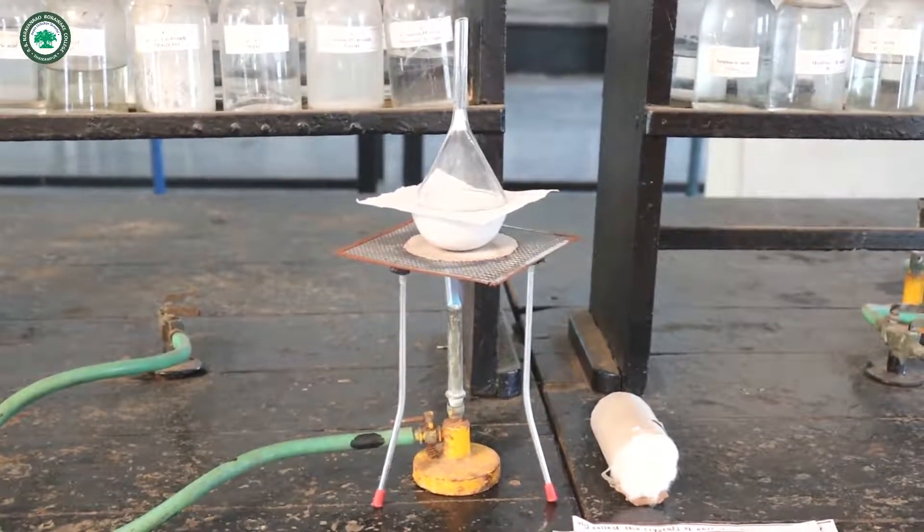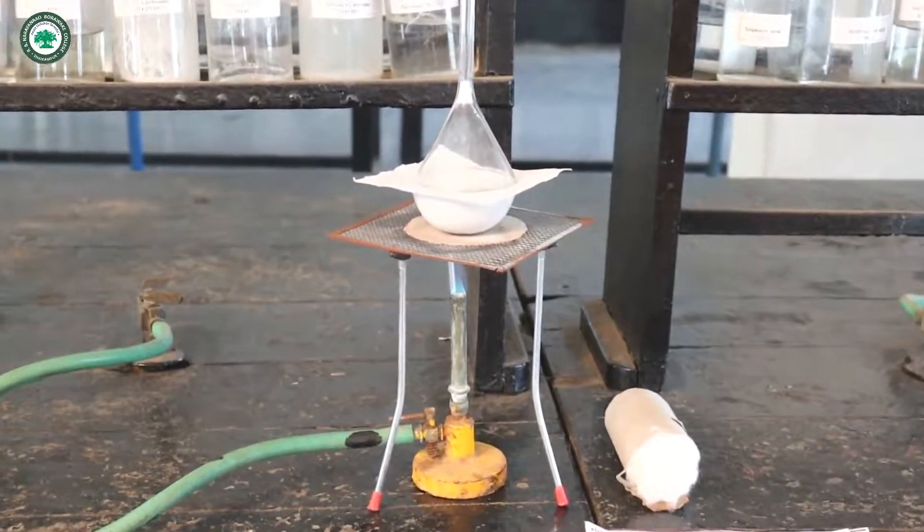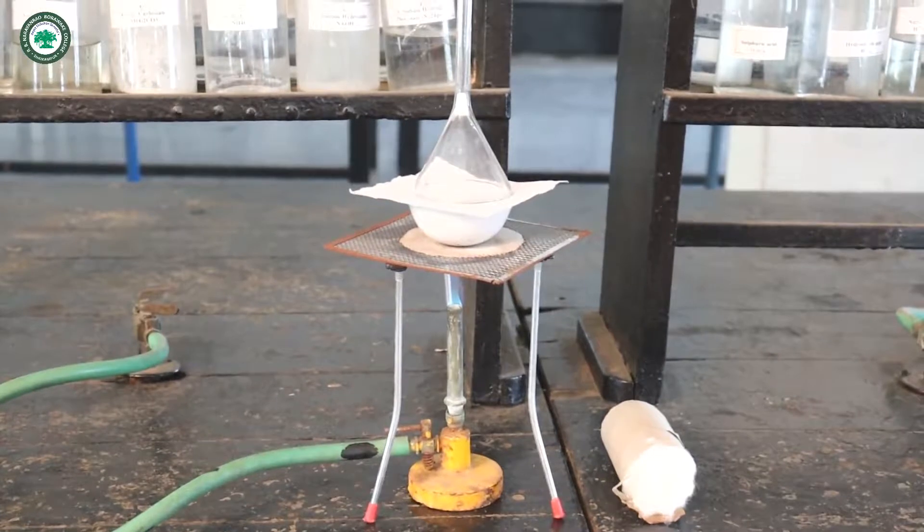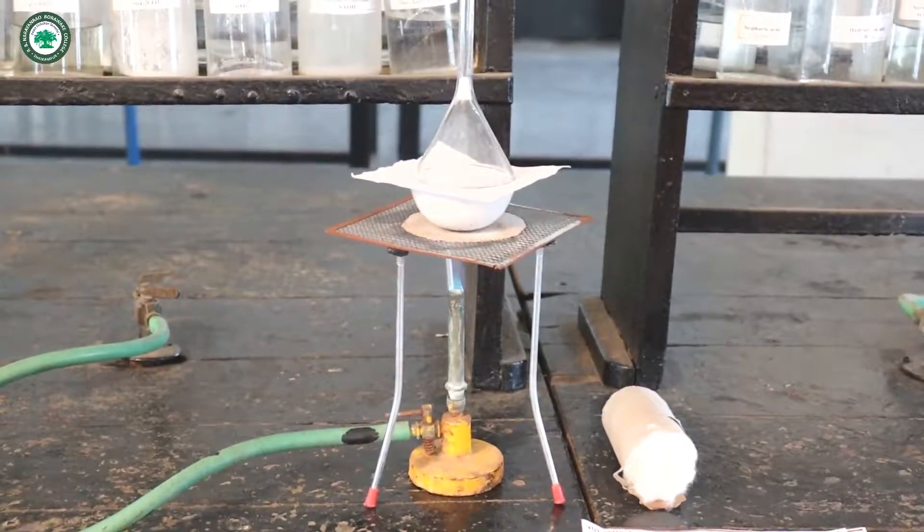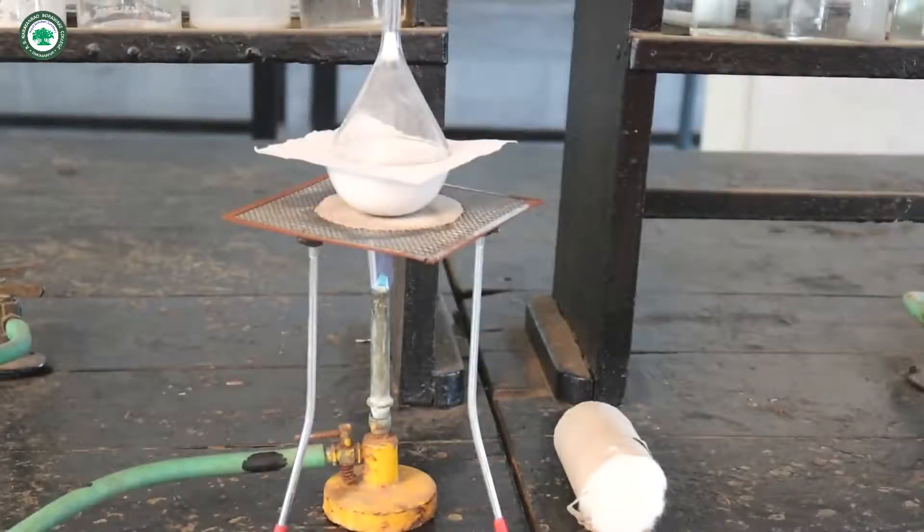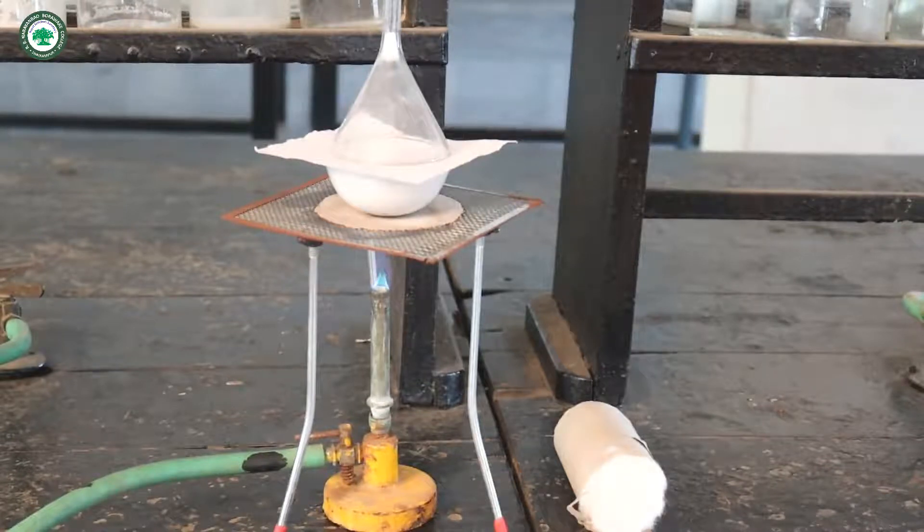After some time, crystals of phthalic anhydride start to appear on the inner side of the funnel. Now it is observed that small amount of needle-shaped crystals starts to appear on the inner side of the funnel.